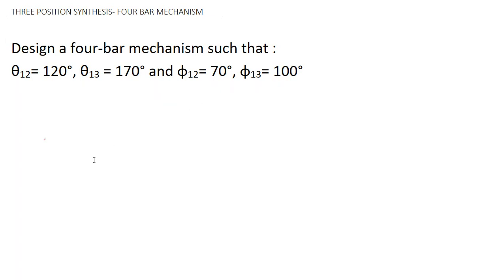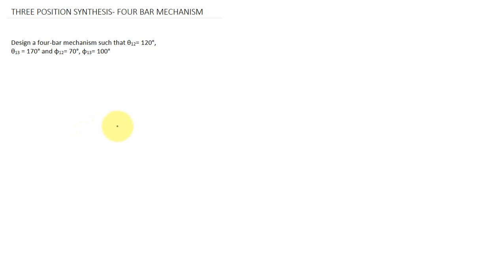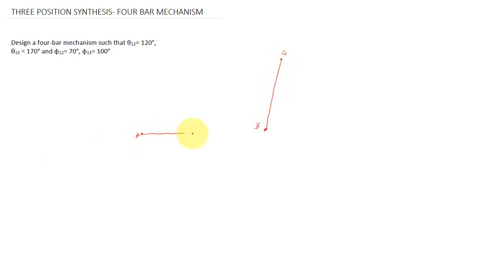I hope you are aware of what θ12, θ13, φ12, and φ13 are. First of all, we have to fix the grounded points, that means points A and B. So this is your point A and this is your point B. Next, we are going to mark the link C1, and by assuming the position, I am taking point C1 and joining the lines AB and BC1 — so two links are ready.